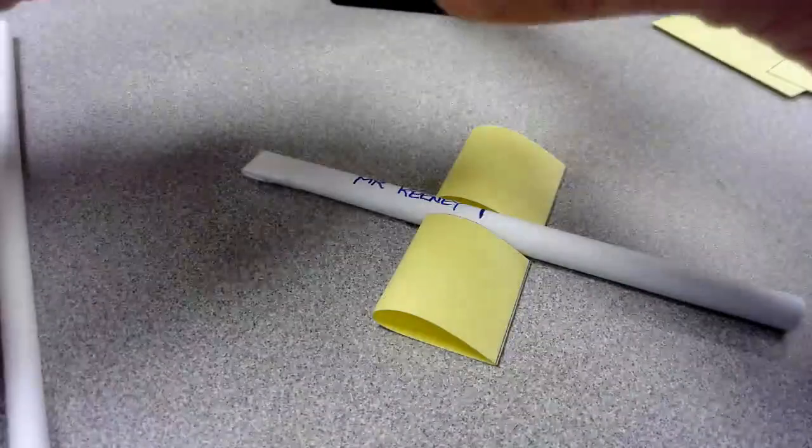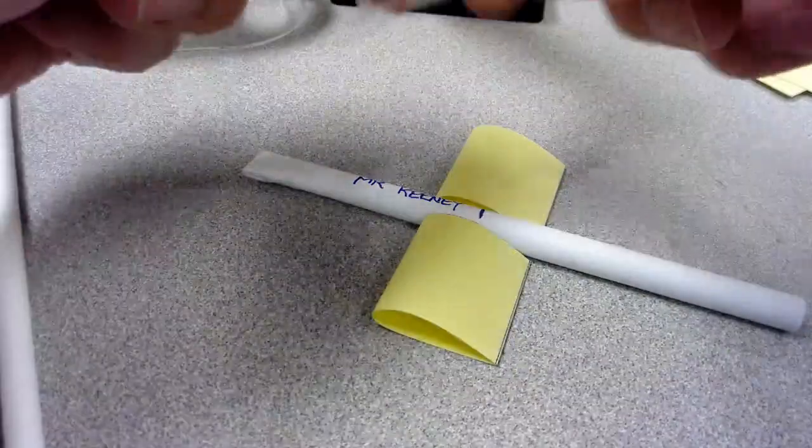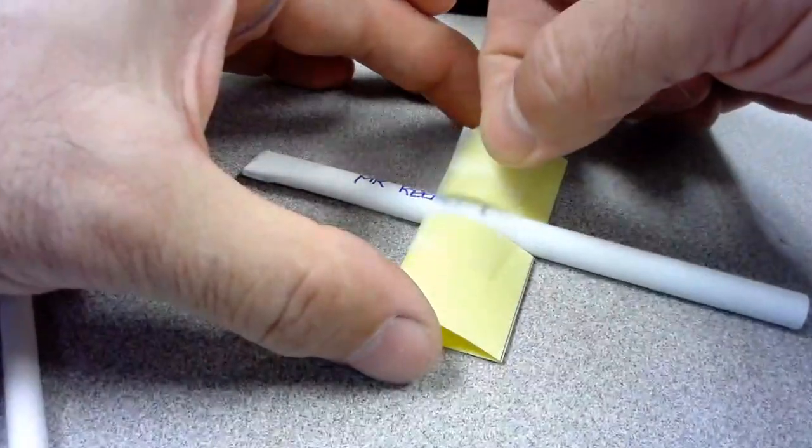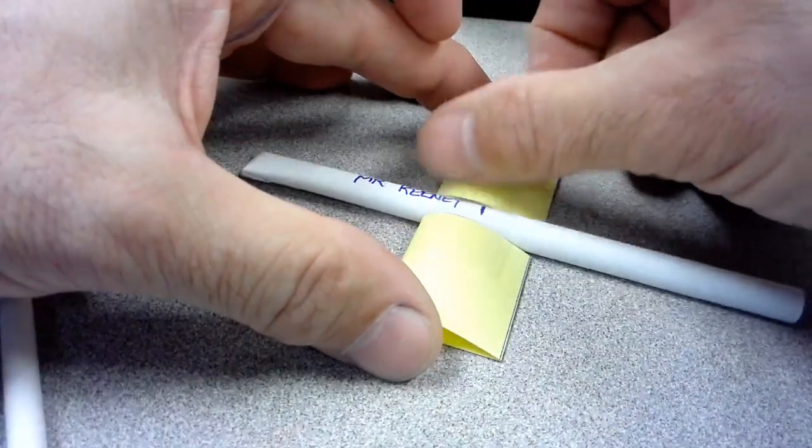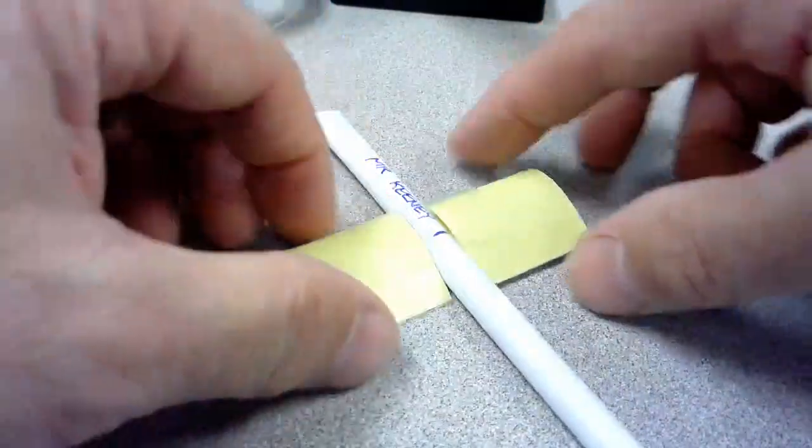Then you're going to take about an inch and a half long piece of tape, and you're going to put the tape right across so it's touching both wings and across the top of the airfoil.